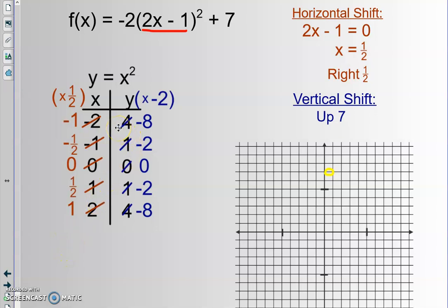Now, I'm going to take this table of movements from my new origin. So from this new starting point, left 1, down 8. Left a half, down 2. From the new origin, go over 0, up 0. From the new origin, right a half, down 2. From the new origin, right 1, down 8. And we get this super skinny parabola.